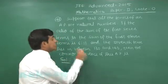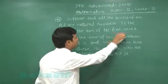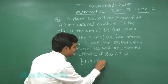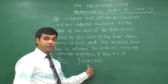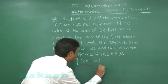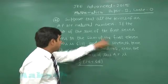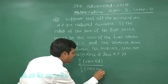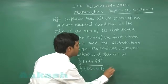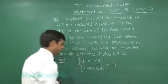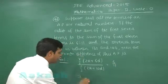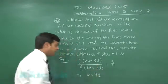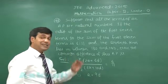It is given that the ratio of sum of first seven terms, that is (7/2)(2A plus 6D), if I consider A as the first term and D as the common difference, divided by first 11 terms, that is (11/2)(2A plus 10D) is equal to 6 by 11. Simplifying, we get the relation as A equals 9D.